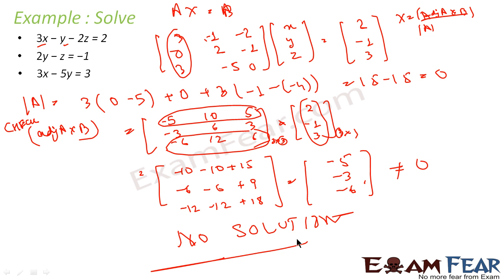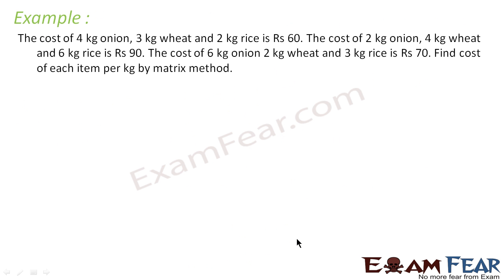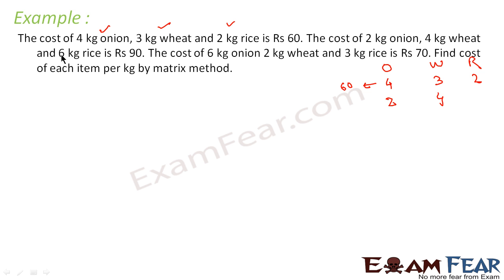Here we could not find a solution because determinant of A is 0 but adjoint(A)·B is not 0. Let's take one last example: the cost of 4 kg onion, 3 kg wheat, and 2 kg rice is 60 rupees. With 2 kg onion, 4 kg wheat, and 6 kg rice the cost is 90 rupees. With 6 kg onion, 2 kg wheat, and 3 kg rice the cost is 70 rupees.